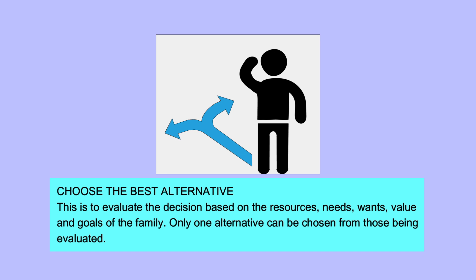Step 4 — Choose the best alternative: This is to evaluate the decision based on the resources, needs, wants, values, and goals of the family. Only one alternative can be chosen from those being evaluated.